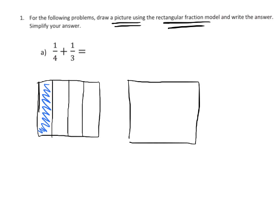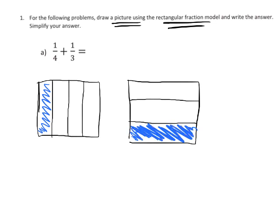For the thirds, I'm going to cut horizontally and shade in one-third. So over here we've got one-fourth and here we've got one-third. Now to get our common denominators, since this is cut into fourths and this is cut into thirds, I'm going to take my fourths and cut them into thirds, and take my thirds and cut them into fourths.